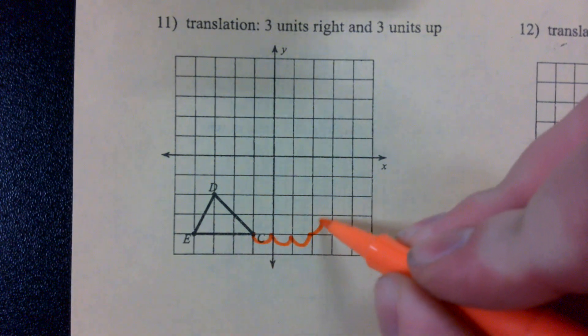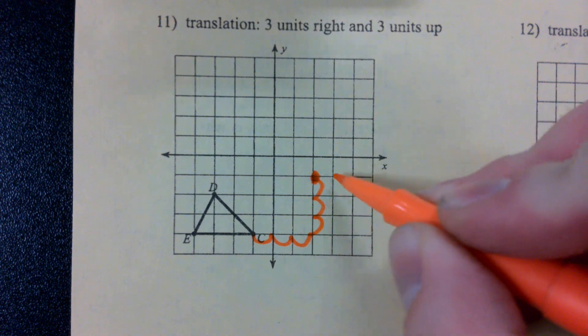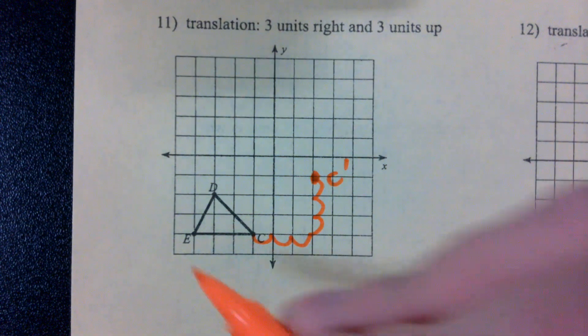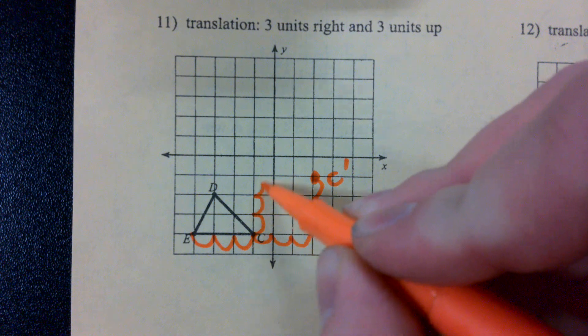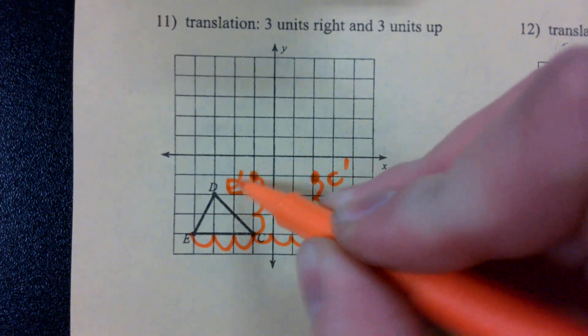1, 2, 3 to the right. 1, 2, 3 up. C prime. 1, 2, 3 to the right. 1, 2, 3 up. E prime.